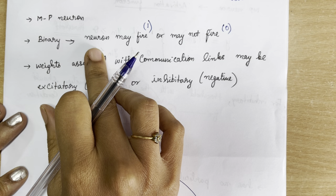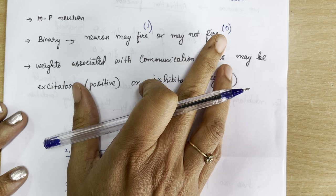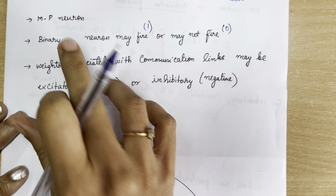There are two possible states for this particular neuron — the neuron may fire or it may not fire. We can say it may be active, which is called 1, or it may be silent, which is called 0. That is why this MP neuron is a binary type of neuron.